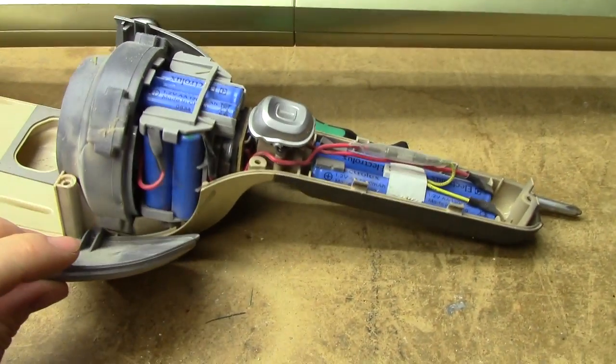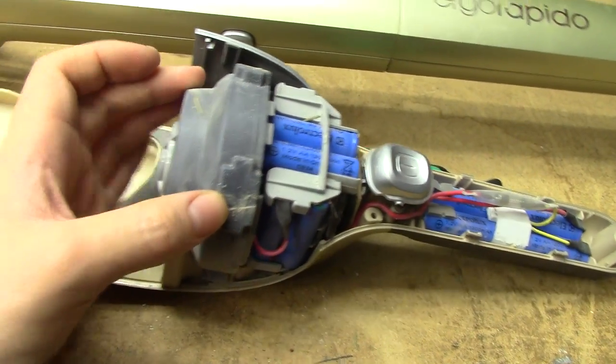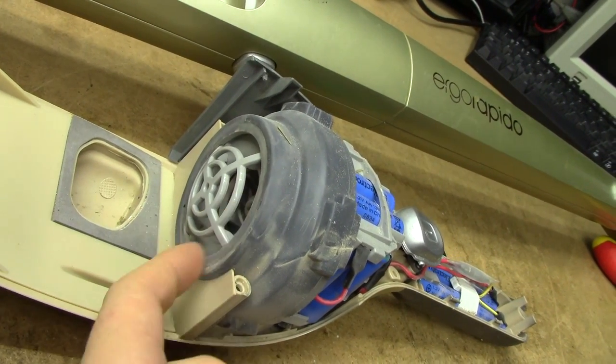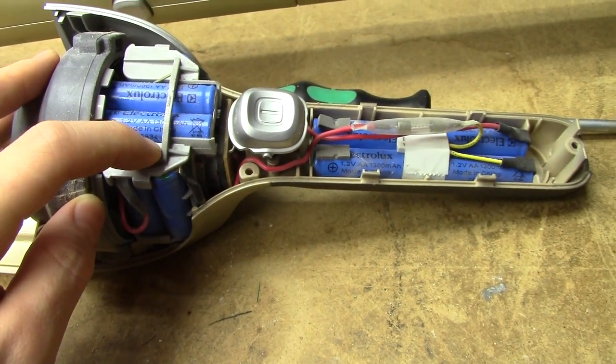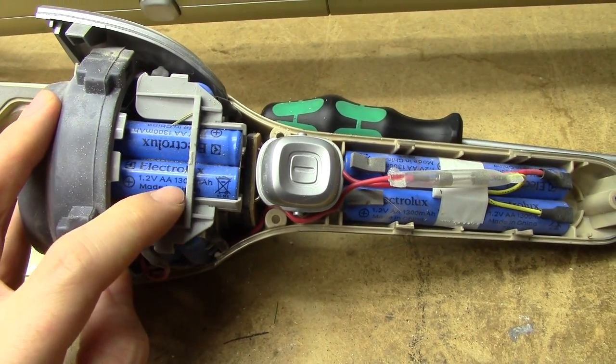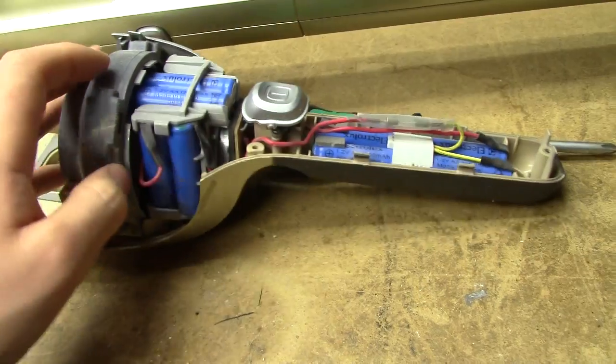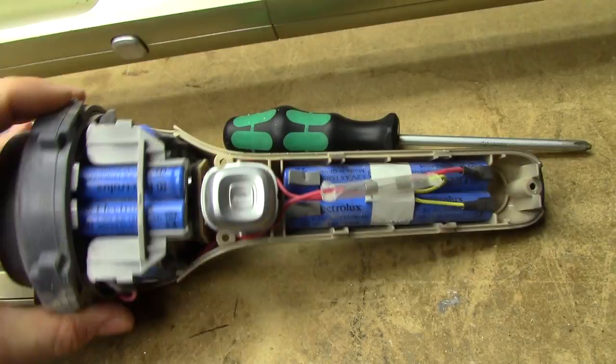The motor assembly really does look strikingly similar to the lithium model, perhaps slightly larger radius on the opening. And we've got, wow, these are some dinky looking batteries. AA 1300mAh, Electrolux branded. Wow, this thing is simplicity itself it seems.